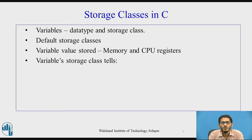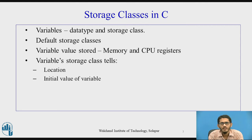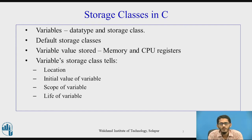The storage class of a variable tells us four things. First, the location — where exactly the variable value will be stored. Second, the initial value of the variable — what value is stored in the variable before the user assigns another value. Third, the scope — where in the program the variable can be accessed. And fourth, the life of the variable — how long the variable's value is used in the program.